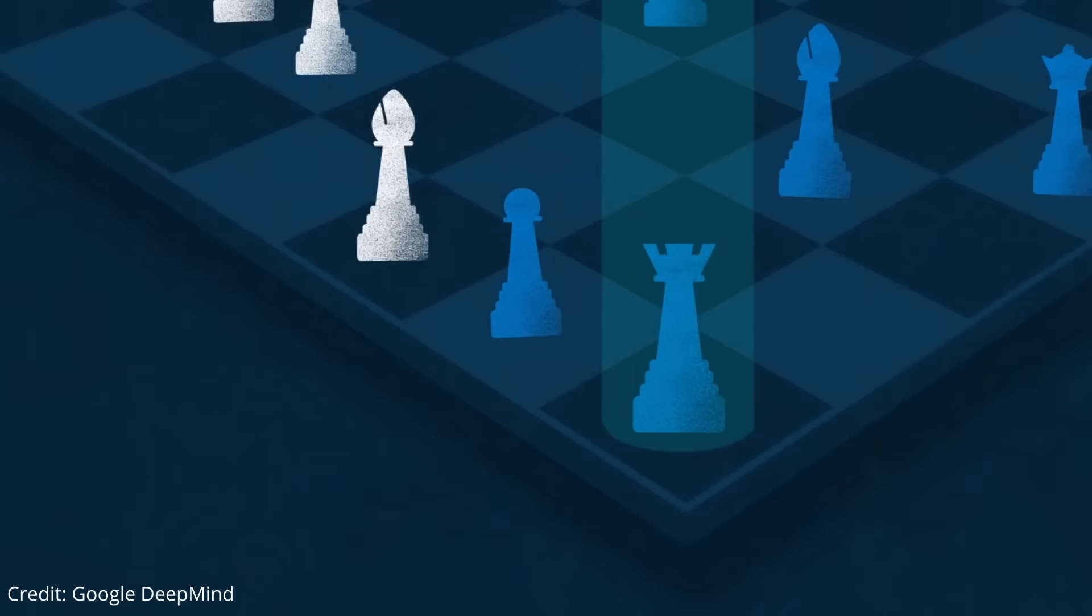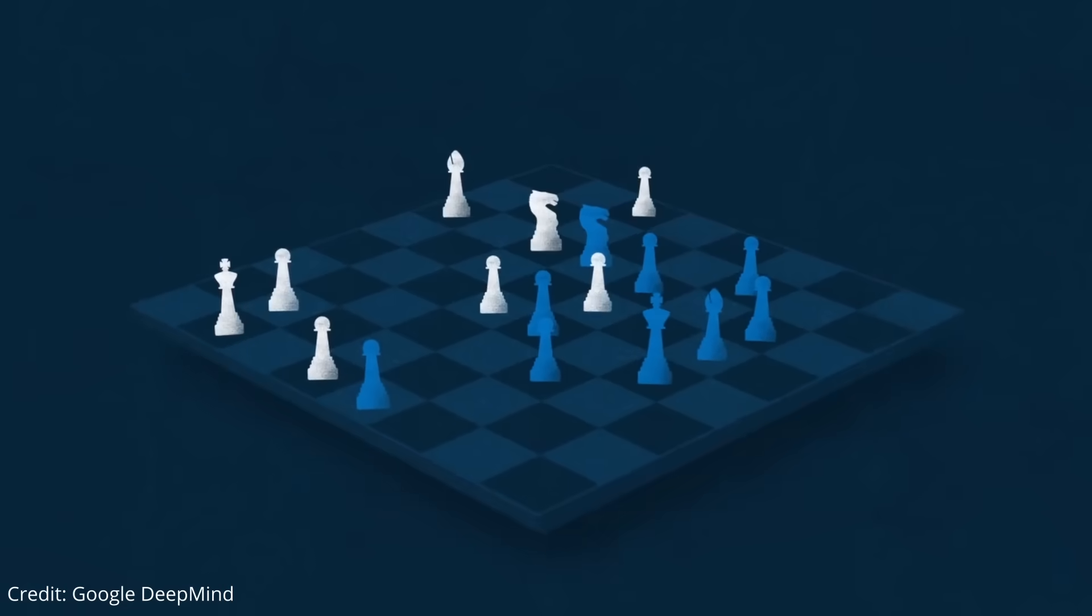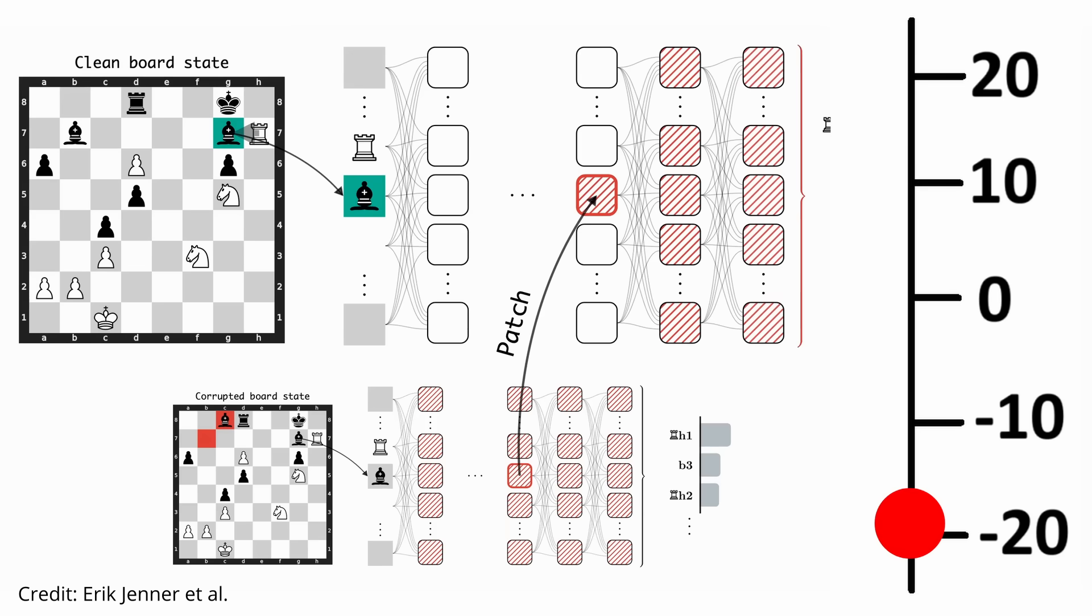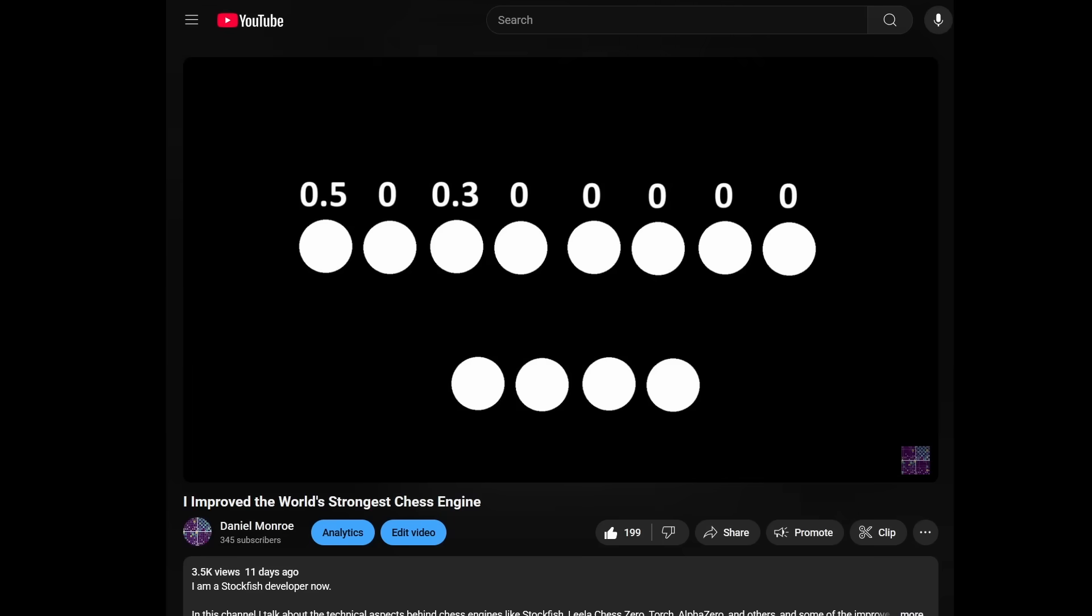This neural network started with random outputs, but learned from millions of positions to understand what makes a chess position good, and my first improvement to Stockfish was speeding up this neural network.